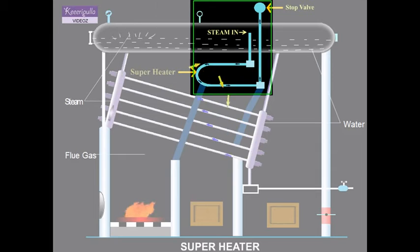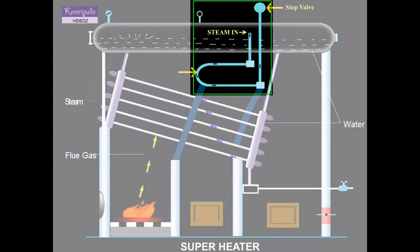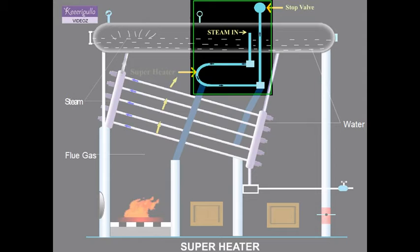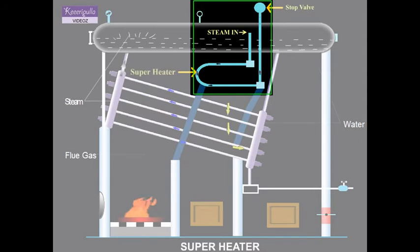The tubes are made of high quality steel in the form of U-tubes. The superheater is located in the path of furnace gases where the temperature of the gases is not less than 550 degrees centigrade.